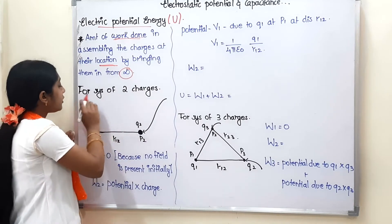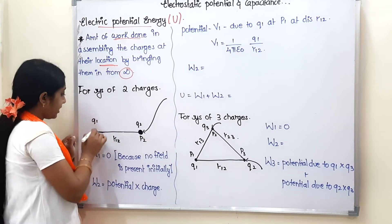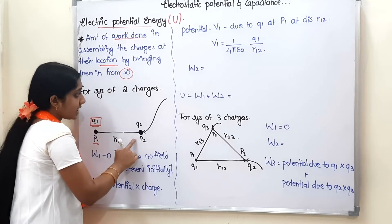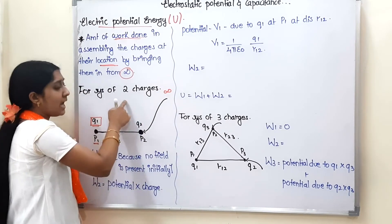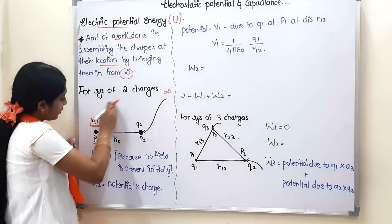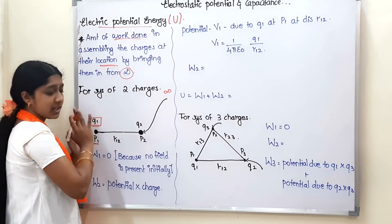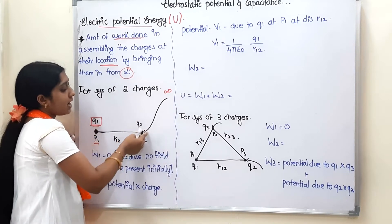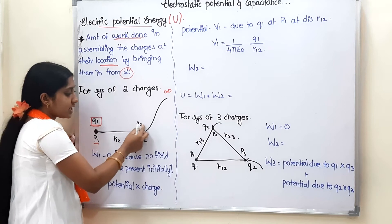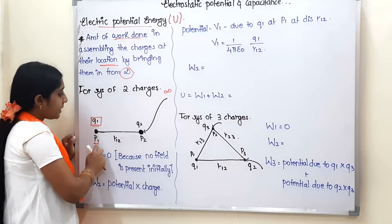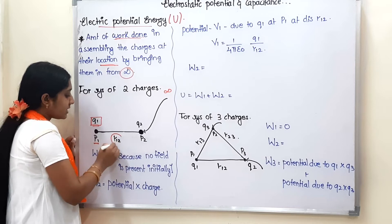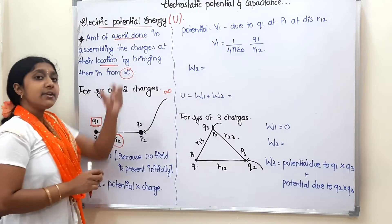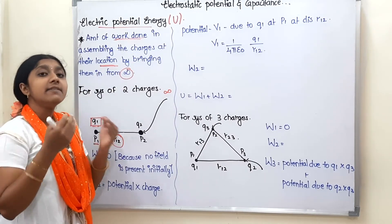Now for the system of two charges, let's place two charges. First, charge Q1 is placed at position P1. We bring this charge from infinity and put it at rest. Then charge Q2, currently at infinity, will be placed at position P2. The distance between P1 and P2 is R12.